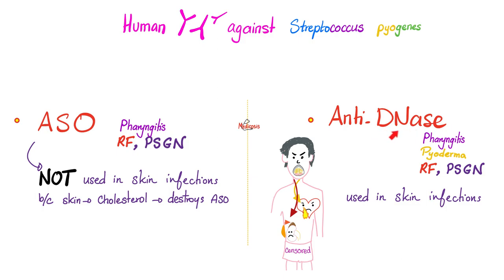Conversely, anti-DNase B antibodies are helpful for throat infection — check. Rheumatic fever — check. Nephritic syndrome — check. And the pyodermas, your erysipelas, your cellulitis, your necrotizing fasciitis, and any other skin disease caused by Strep — check. Because cholesterol does not affect DNase. Medicine makes so much sense once you understand what you're talking about.